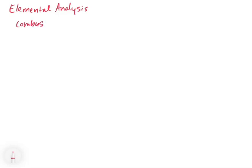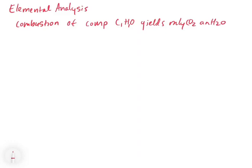So combustion of compounds containing carbon, hydrogen, and oxygen yields only CO₂ and water when you combust them. We can use this fact — if we can collect the carbon dioxide and water, we can get information about what was contained inside that molecule. In a chemical formula, if we have something that's CₓHᵧOᵤ plus oxygen, this is going to give us carbon dioxide and water. That's the definition of a combustion reaction.